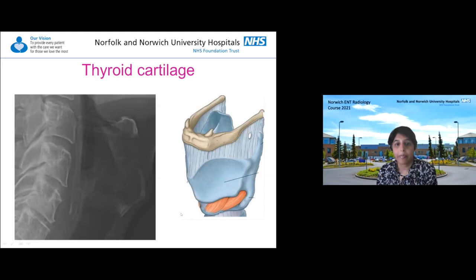In diagram form, we have the hyoid bone with the body, lesser cornu, and greater cornu, and the thyroid cartilage. In between the hyoid bone and thyroid cartilage is the thyrohyoid membrane, which is an important structure. If somebody comes in after hanging, this is probably the most important structure to look for, as rather than fracture of the hyoid bone, this structure can be deformed and cause the patient difficulties.